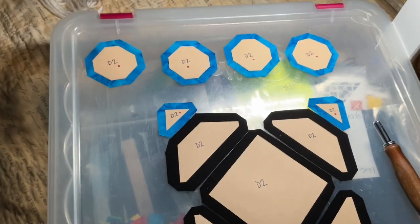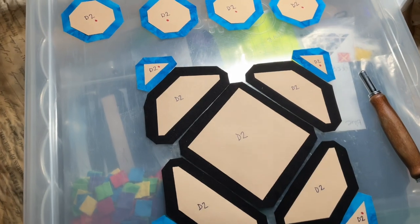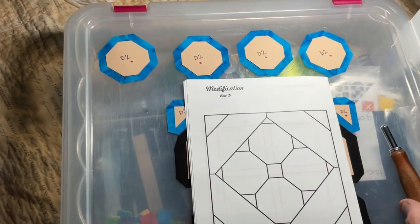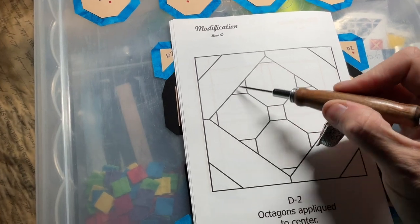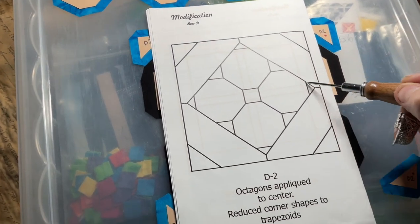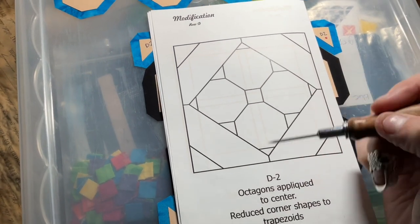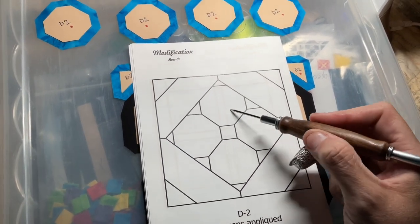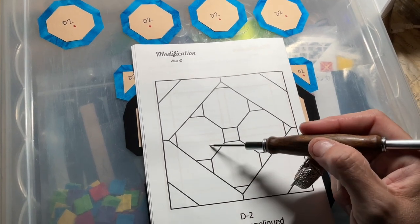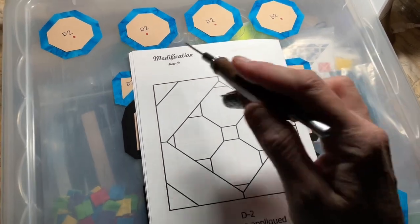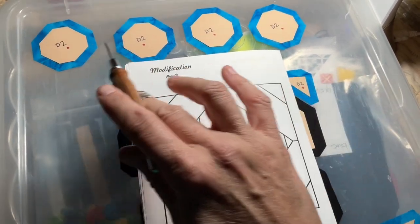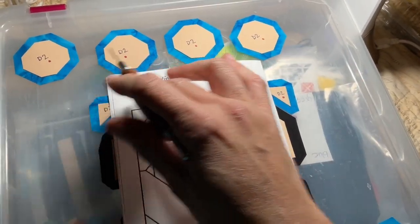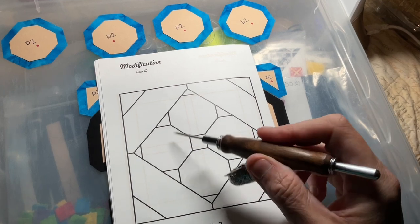What we're going to do is baste the center square. That's going to give us this black square. Just imagine that this is just a piece, because it is. Then we are going to connect the four octagons on their own. We're going to connect them in a square. So I'm going to sew these together, not on top of anything. Just I'm going to baste these and sew them together in a group of four.